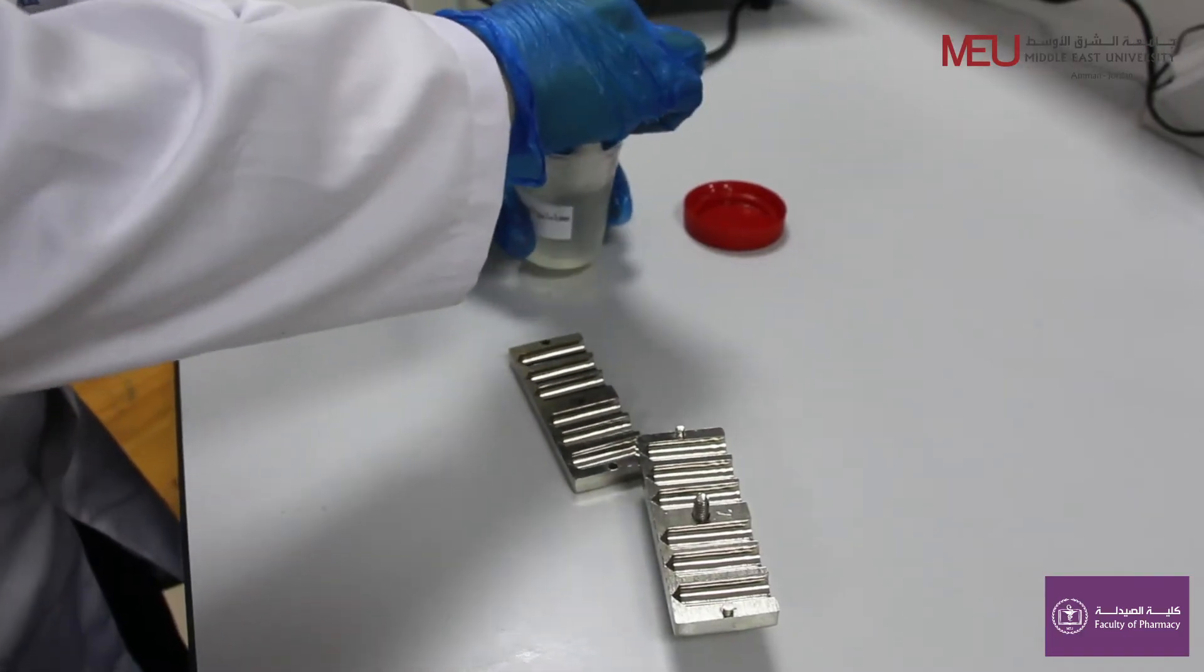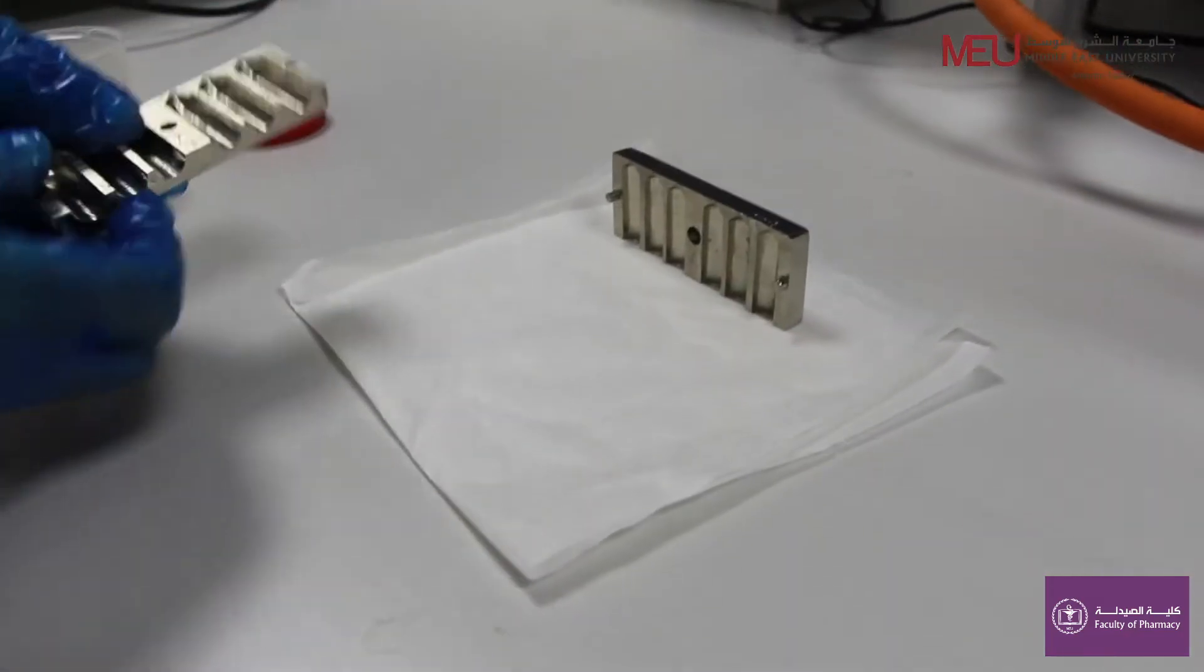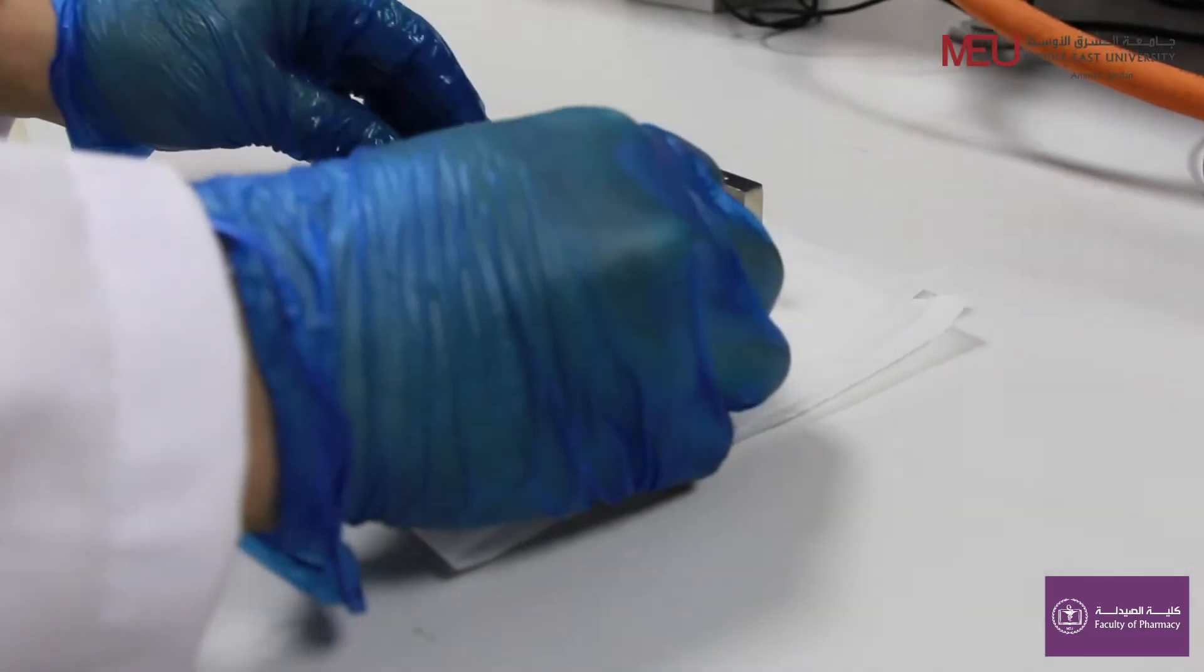Lubricate the mold with the soap solution. Invert it to allow any excess lubricant to drain off.